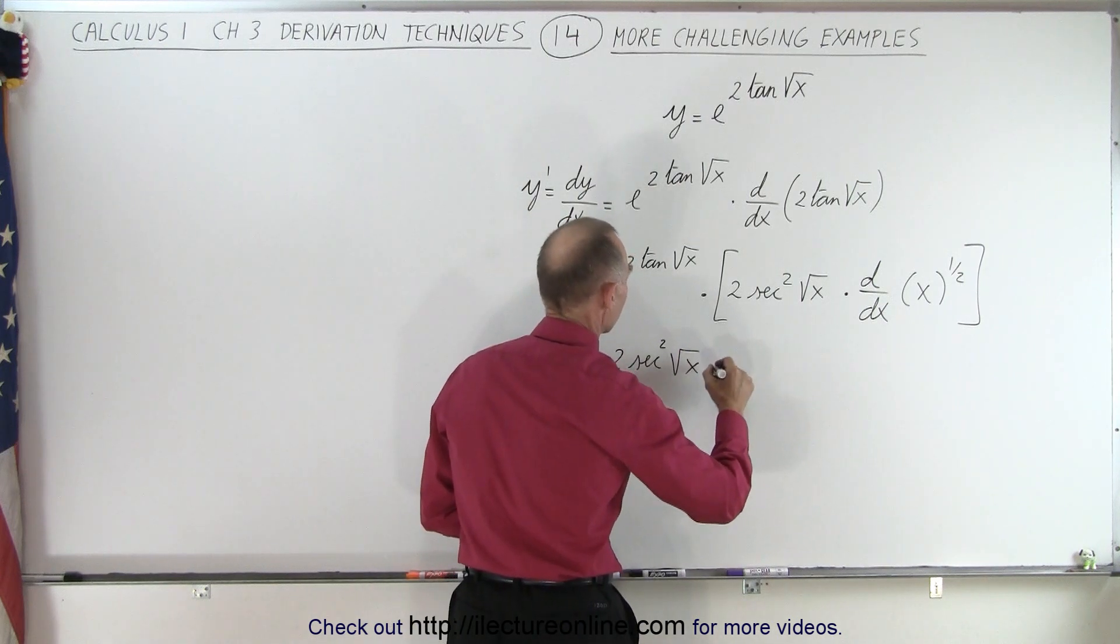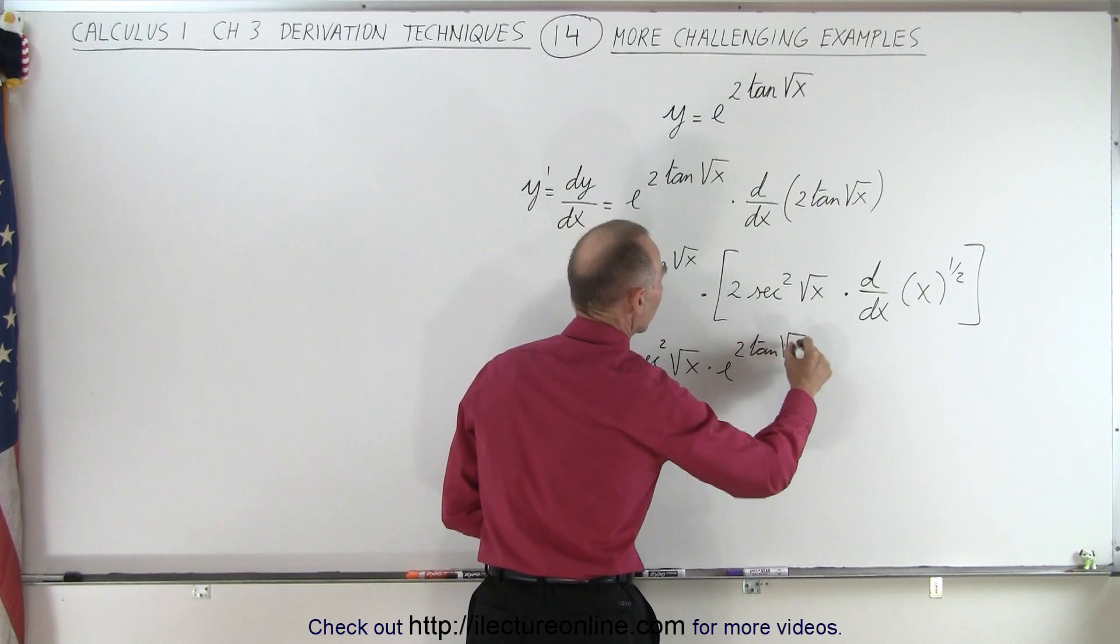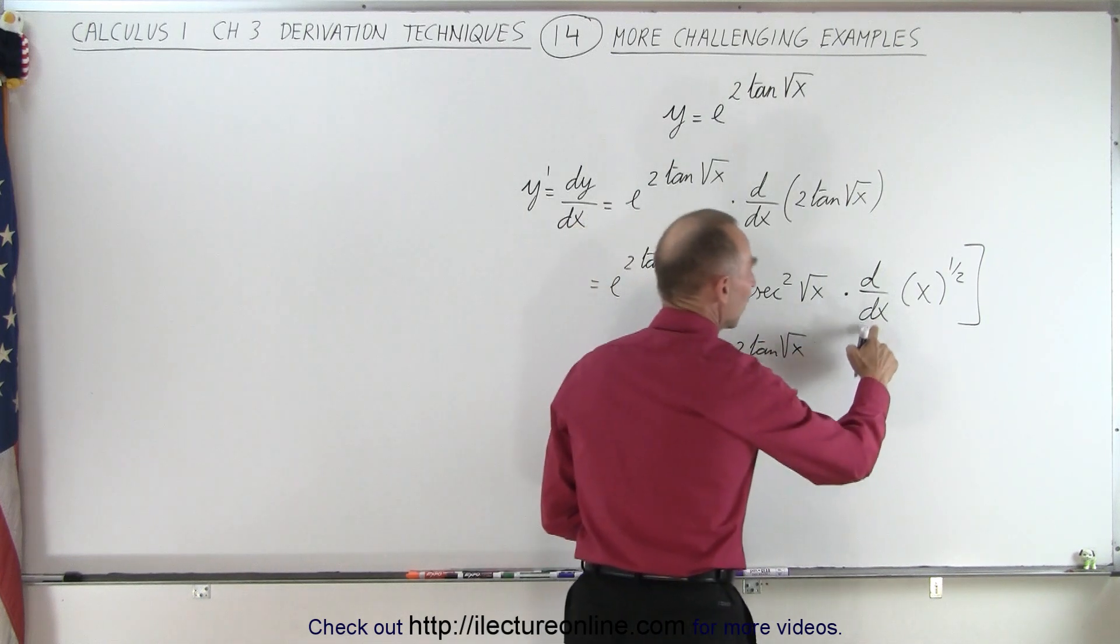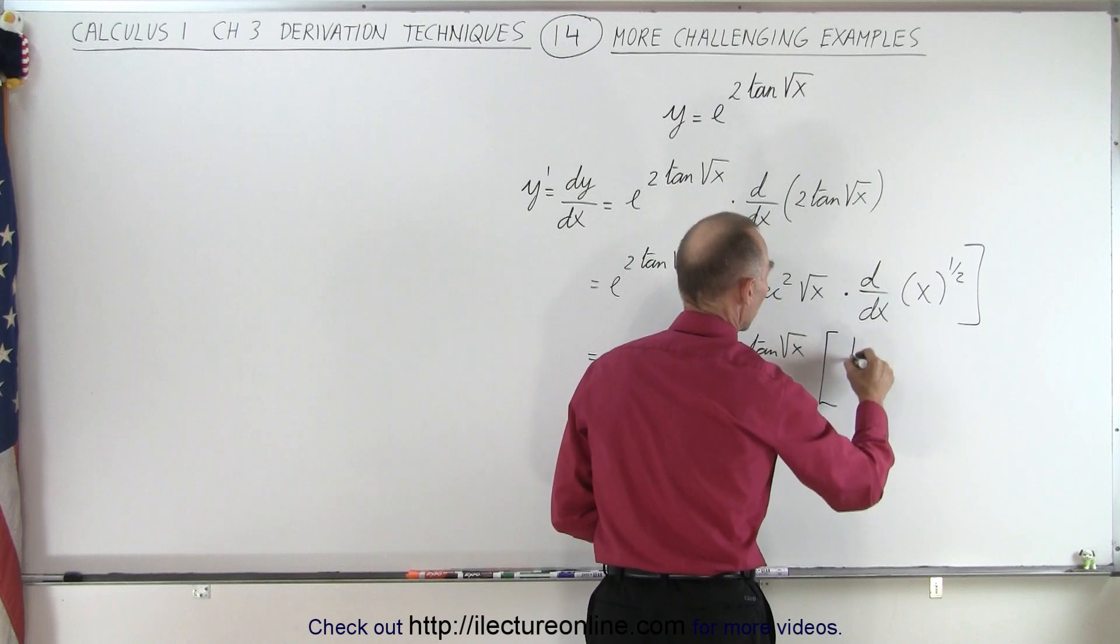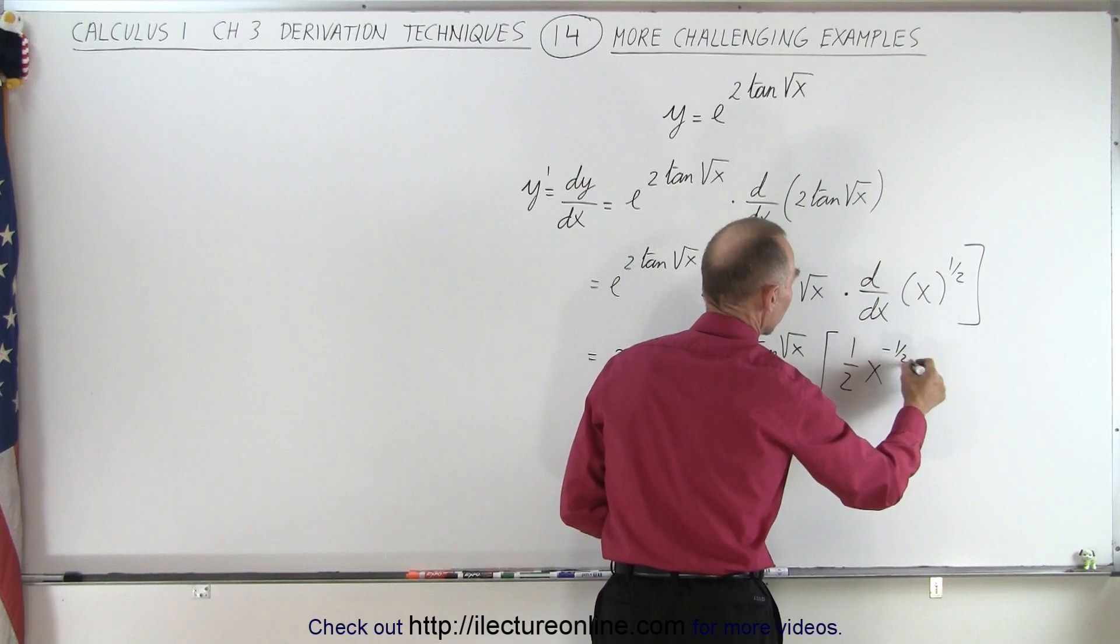times e to the 2 tangent of the square root of x. And now, the derivative of x to the 1 half, well, that is equal to 1 half times x to the, subtract 1 from the exponent, like this.